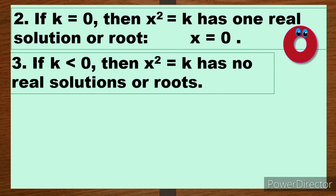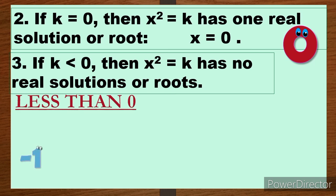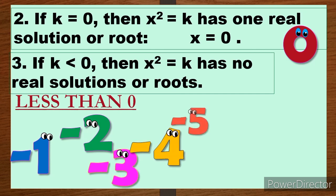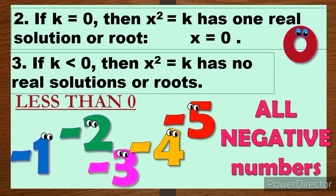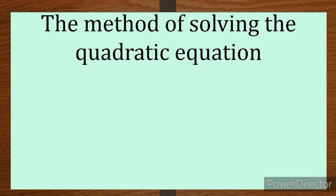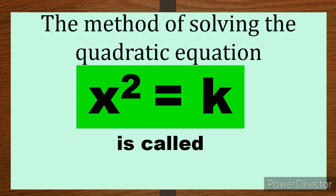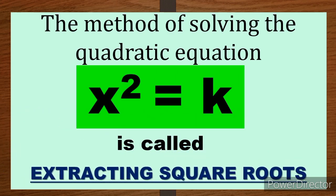Number 3: if k is less than 0, then x² = k has no real solutions or roots — walang solution or roots. What are those numbers less than 0? These are negative 1, negative 2, negative 3, negative 4, negative 5, and all negative numbers. When k is negative, the quadratic equation has no solution. The method of solving x² = k is called extracting square roots.